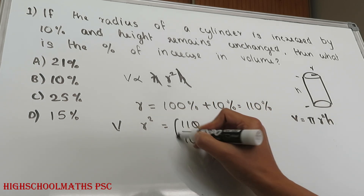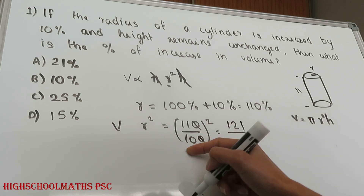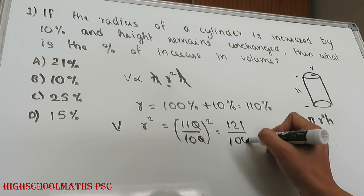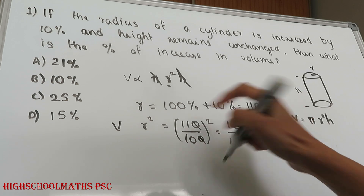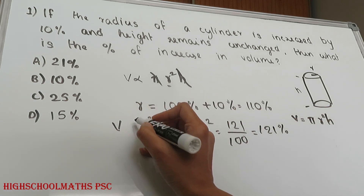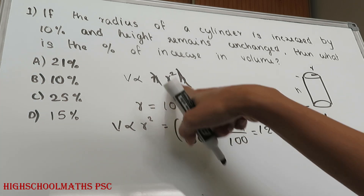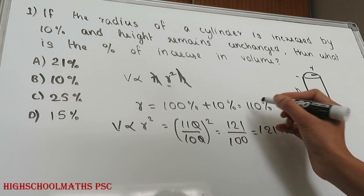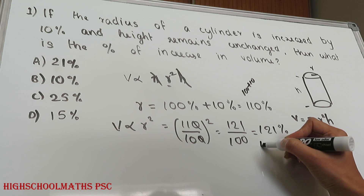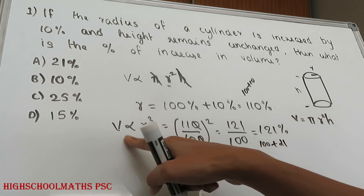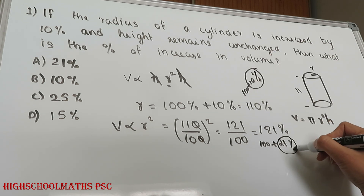If you have r squared here, this square term becomes relevant. The new radius is 110 which equals 100 plus 10. That means the new r squared gives 100 plus 21. If the radius is increased by 10%, the volume increases by 21%.